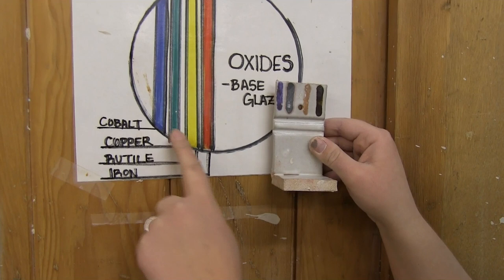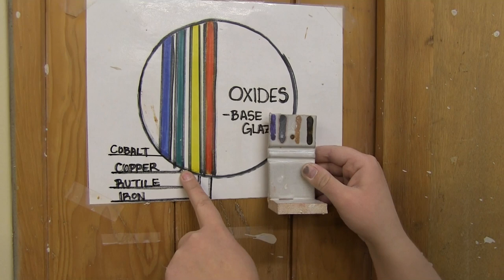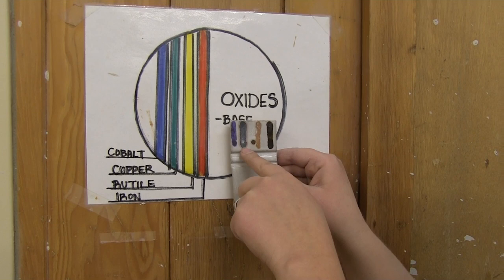The second stripe is copper, and that gives you a lot of green and red flashes, sometimes yellow. But most glazes, as you can see on this waxy white glaze, it actually turns out green.